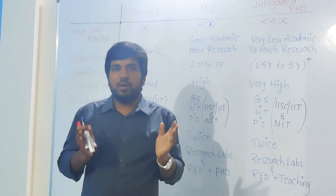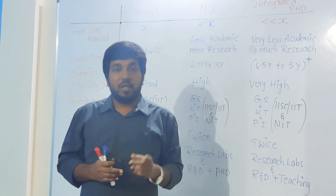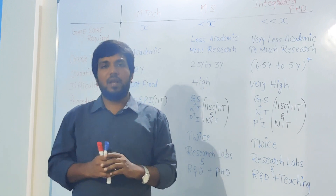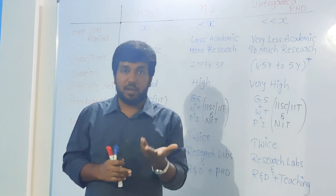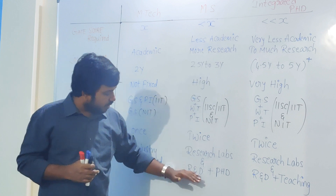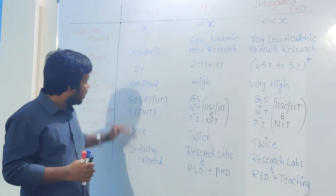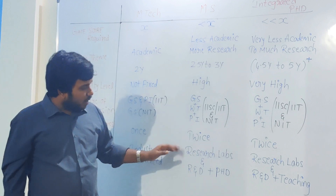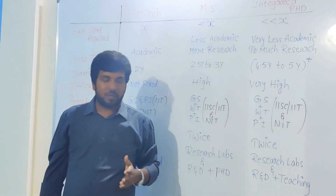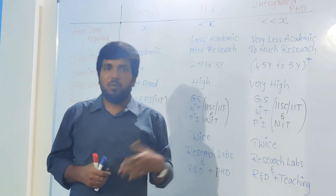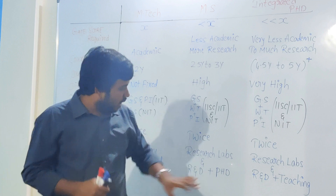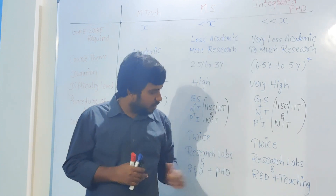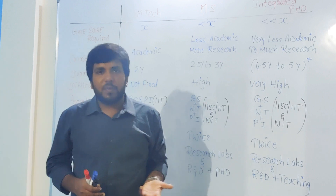Students who complete MS will find opportunities in research labs or R&D departments of big companies like Samsung and Qualcomm. If your MS work matches the company's profile and demand, you can be taken into their R&D lab, sometimes with a higher package than MTech students — though this is rare and specific. If you do really good work in your MS, your professor may also offer you direct PhD admission.